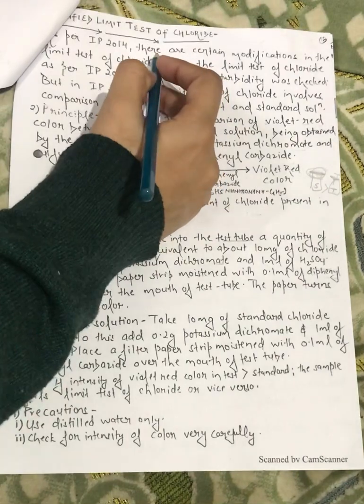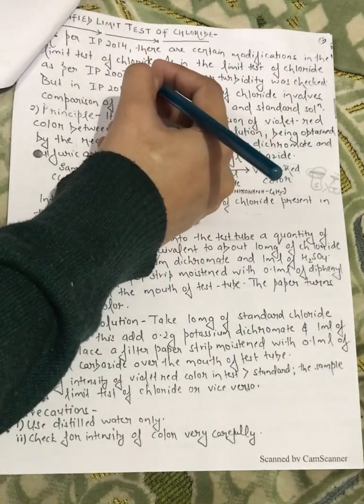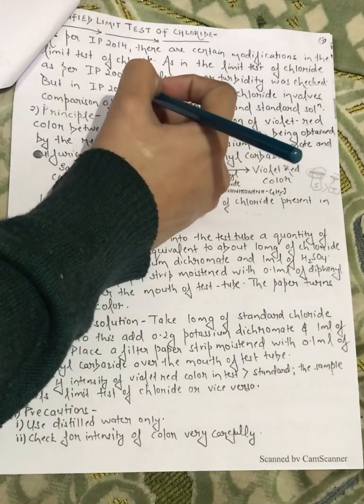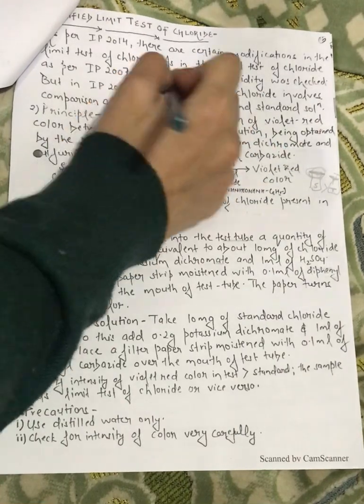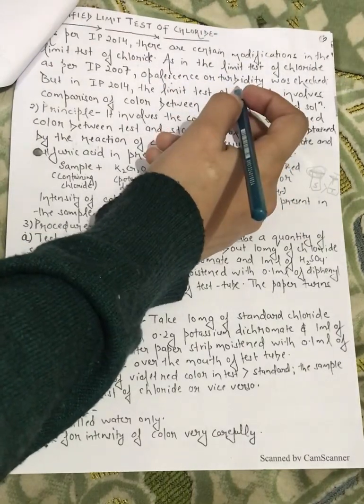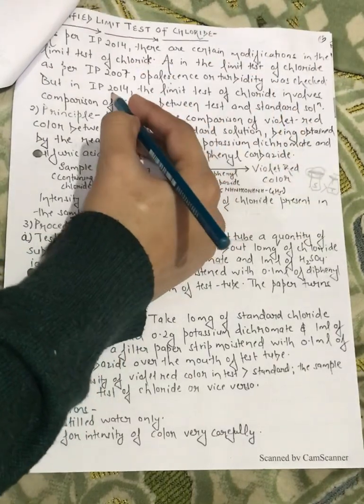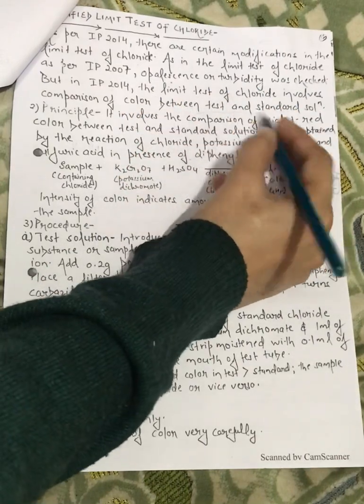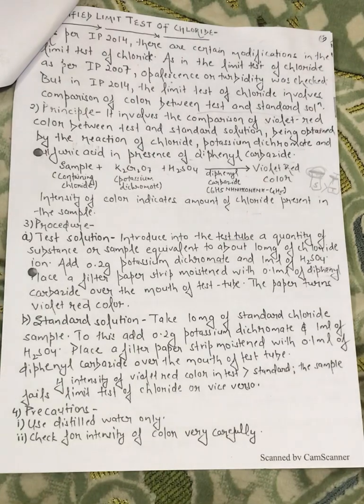As per IP 2014, there are certain modifications in the limit test of chloride. As per IP 2007, the older method was compared to the older method. We were comparing opalescence or turbidity. But in 2014, the limit test of chloride involves comparison of the color between the test and the standard, as we saw in the limit test of iron. We were comparing the purple color in our solution. We will compare it. We will see in the modified limit test of chloride. But the difference is the color will be placed in the paper.